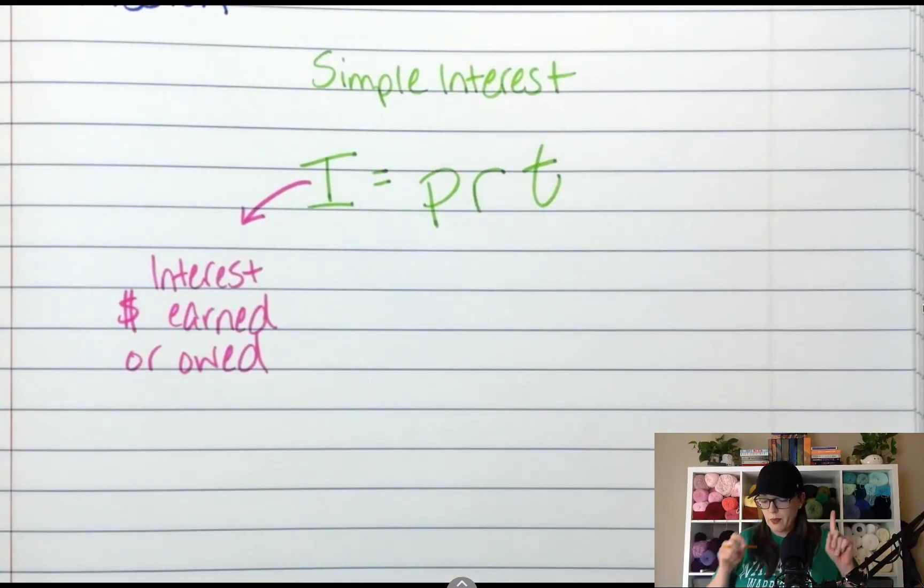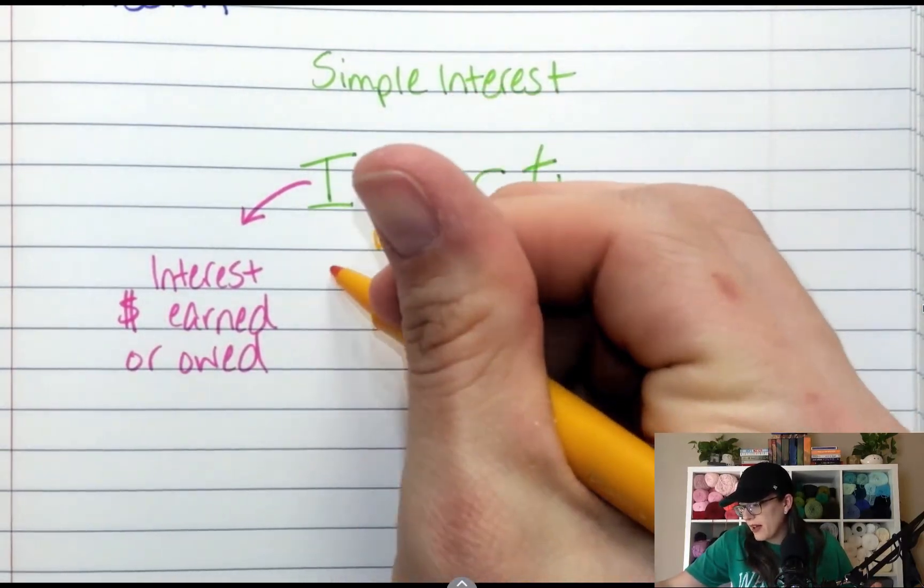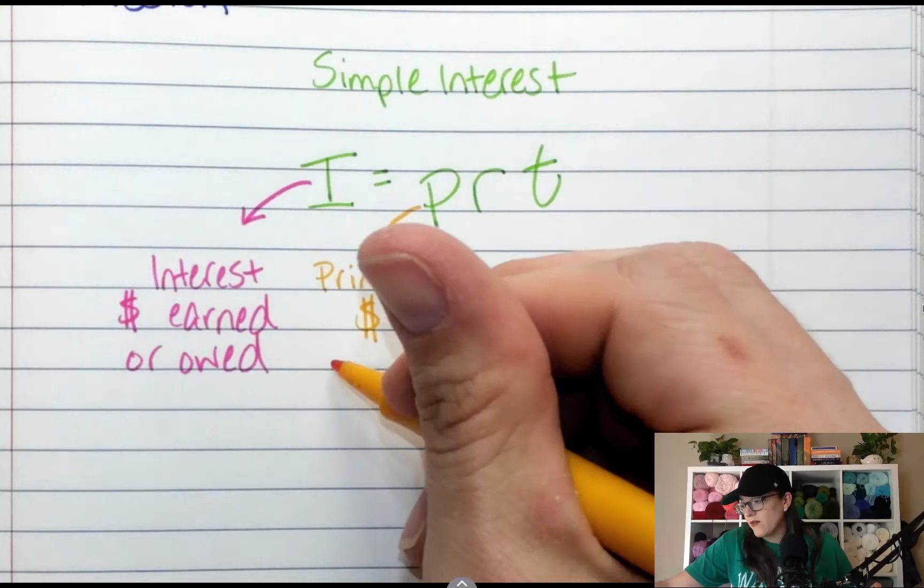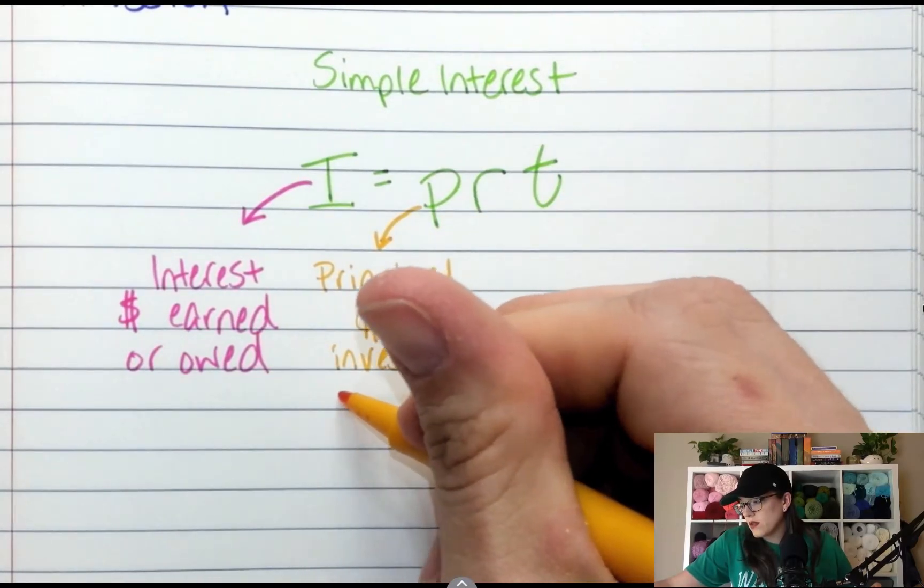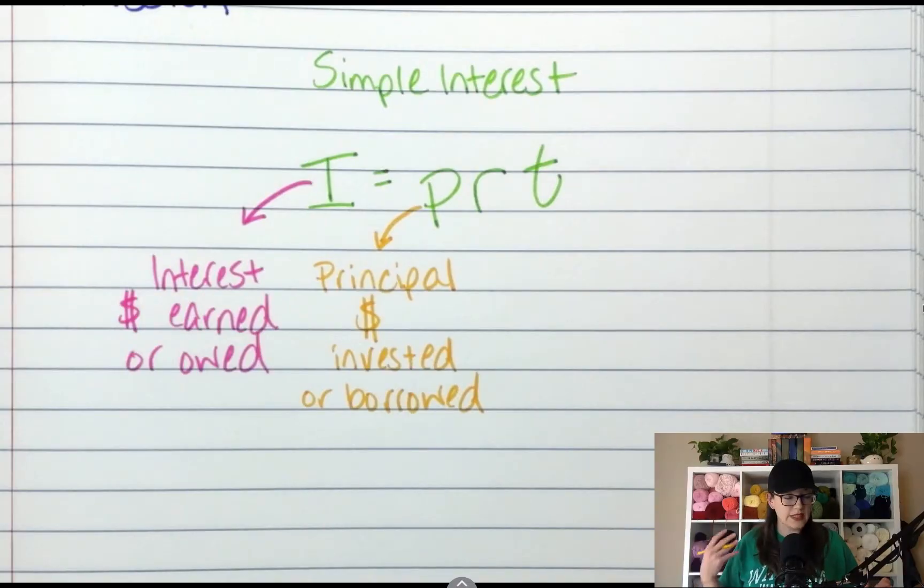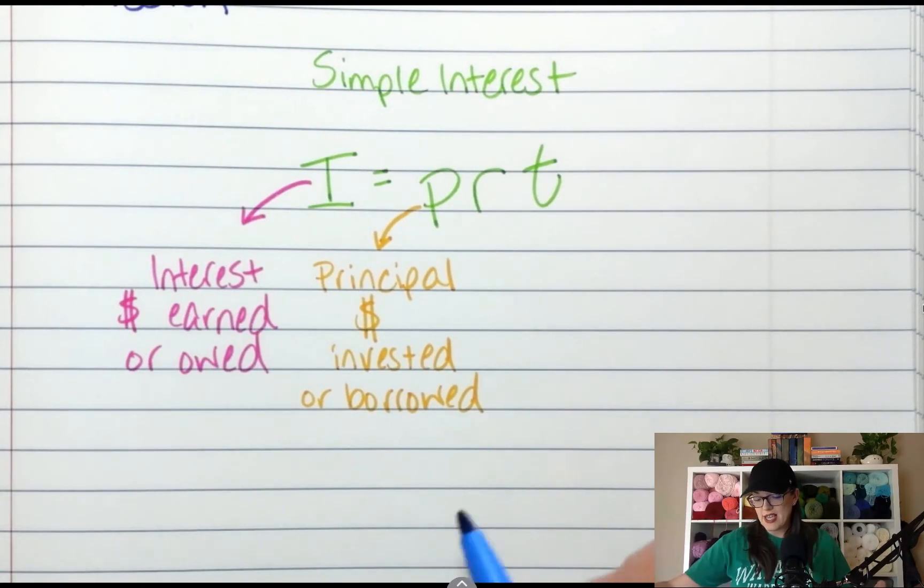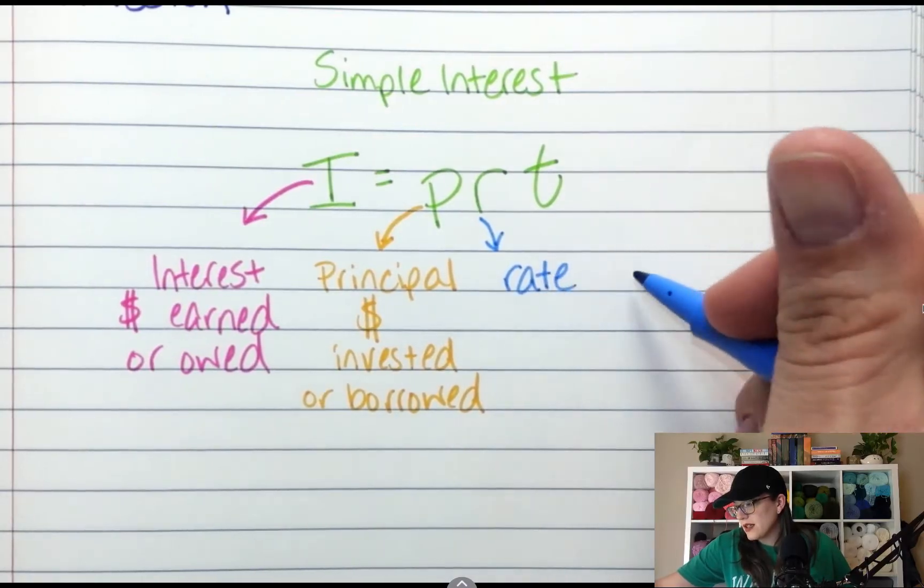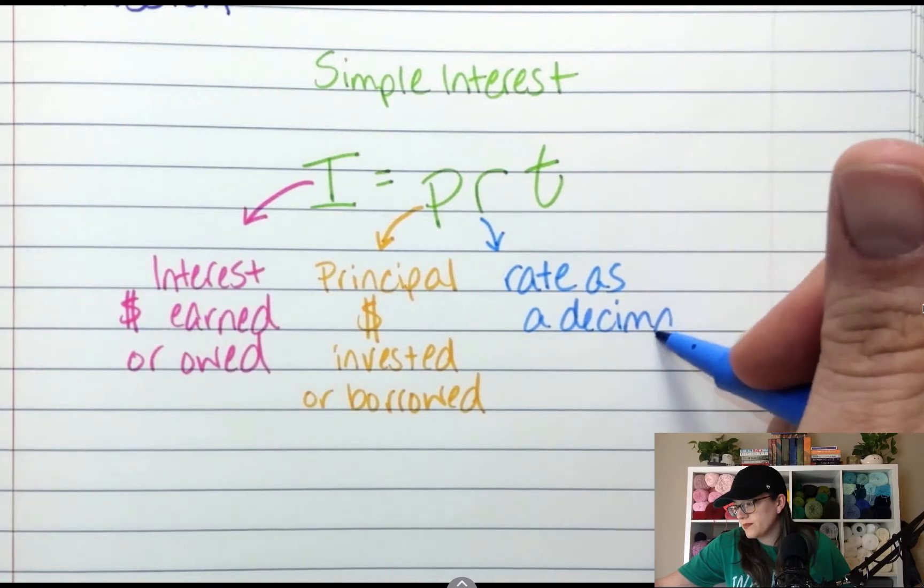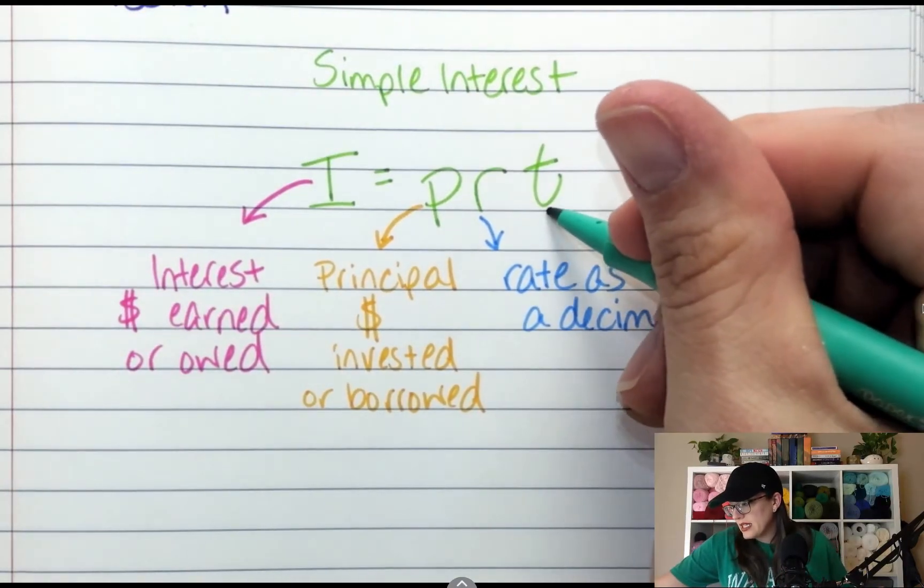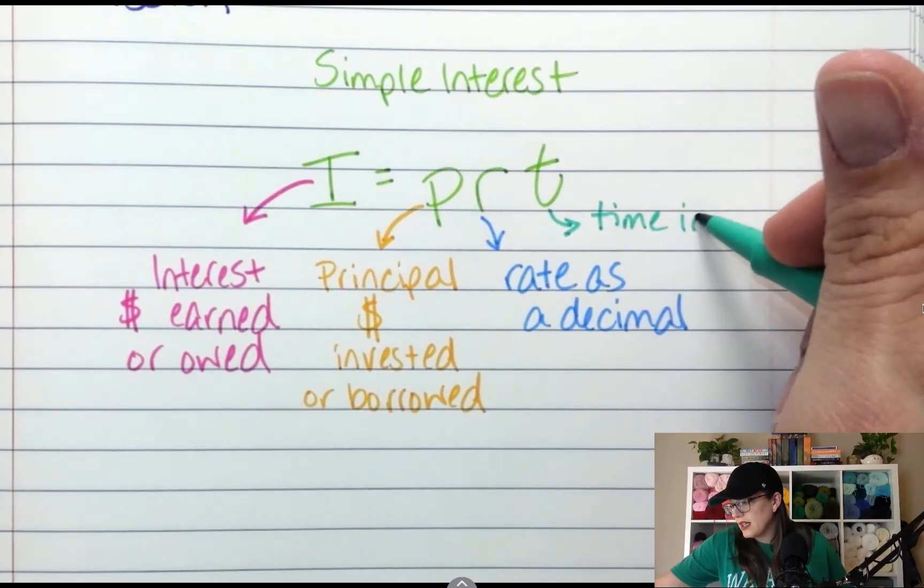P is principal. This is money. This is money either invested or borrowed. The next one is R and R is the percentage rate as a decimal. So this is the rate as a decimal. And then T is time in years. That's a big one. T is time in years. So if they give you six months, how much of a year is six months? A year is half. So 0.5 for years.